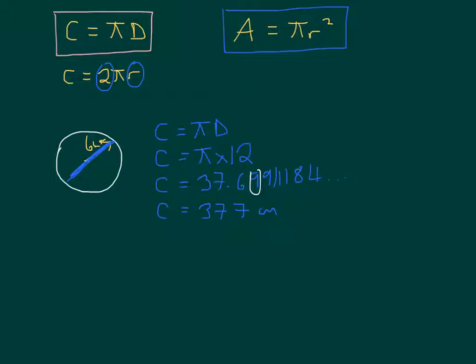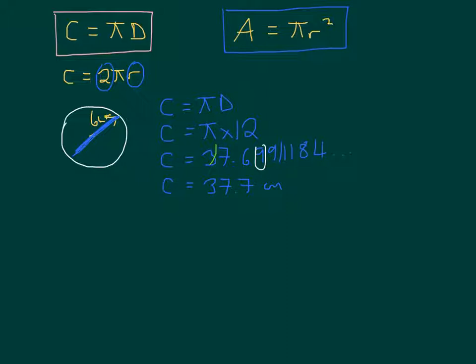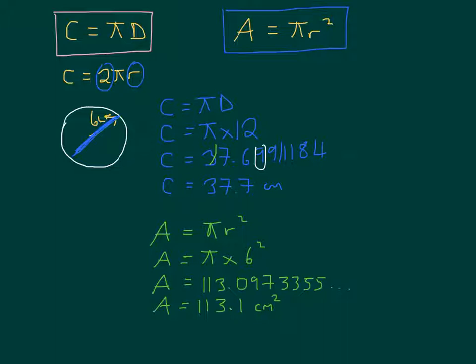What about the area now? So let's move this up a little bit. Right. Area. That's going to be pi r squared. So it's going to be pi times... Now, careful here. The radius is 6. So it's just going to be times 6 squared. And you can put that in your calculator straight away. And again, I would recommend writing down the full answer that your calculator shows. So I've got 113.0973355. And I would round that to one decimal place. 113.1 centimetres squared or square centimetres. So there we go. Those are my answers for circumference and area.